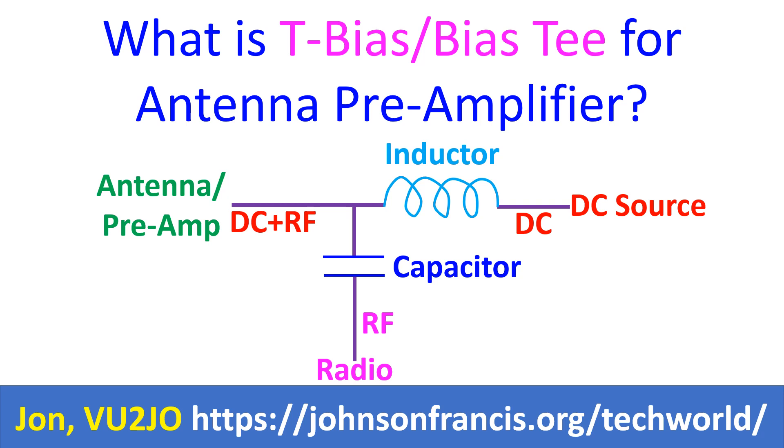The principle is to have an inductor in the direct current input so that the radio frequency from the antenna or radio does not get into the DC power supply. A capacitor is used to block the DC from entering the RF output section of the radio.